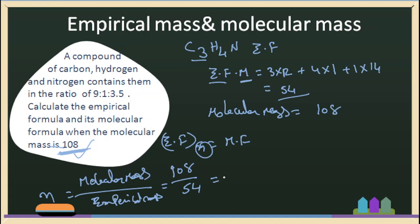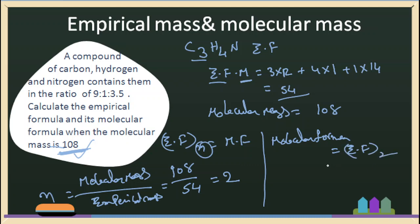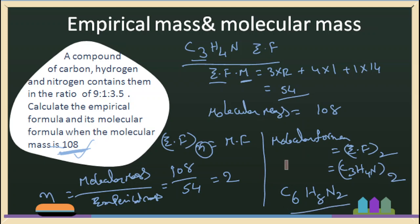So, n equals molecular mass divided by empirical mass — that is 108 divided by 54 — so n equals 2. Then, the molecular formula is equal to the empirical formula times 2. Since the empirical formula is C₃H₄N, the molecular formula is C₆H₈N₂. This is our molecular formula. So we have calculated both the empirical formula and the molecular formula. Please like, share, and subscribe. See you in the next video. Bye!